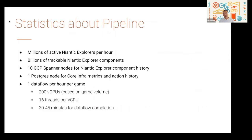Here are some statistics about what our pipeline covers. We cope regularly with millions of active explorers per hour. Those explorers generate billions of trackable components stored in Bigtable. We keep the history of each Niantic explorer in a Spanner database consisting of 10 Spanner nodes. Our goal is to get all those metrics into a single Postgres database. We run a single Dataflow per hour per game, and for our largest Dataflow, we make use of 200 virtual CPUs with 16 threads per CPU.